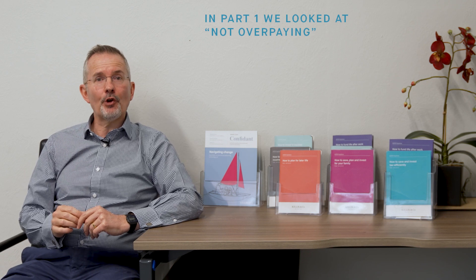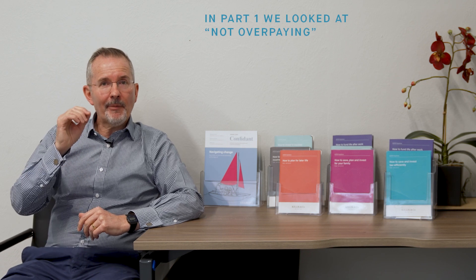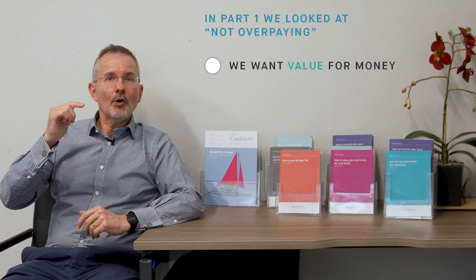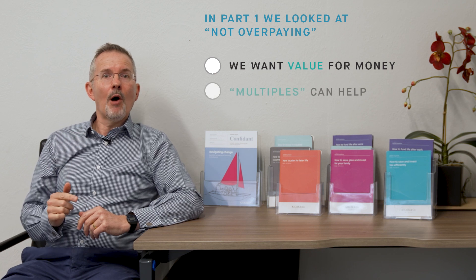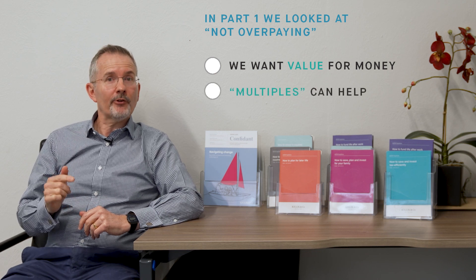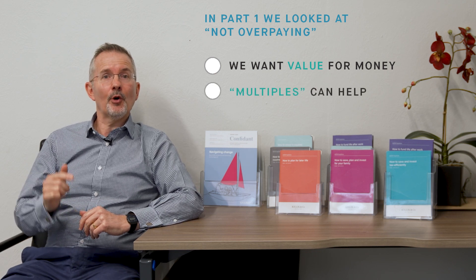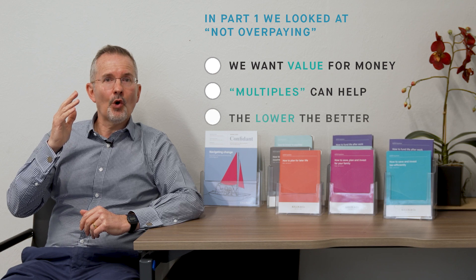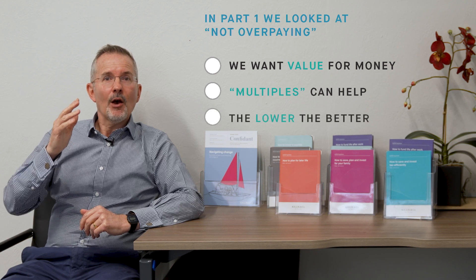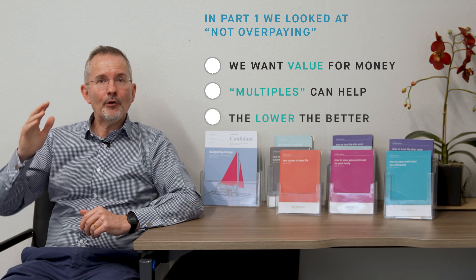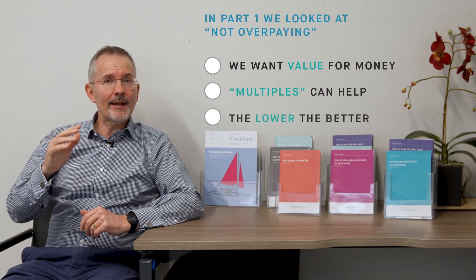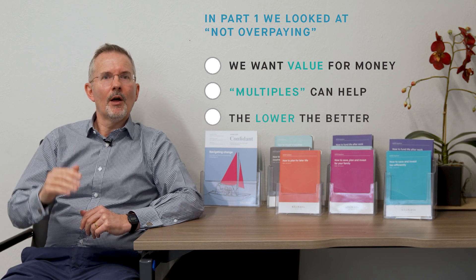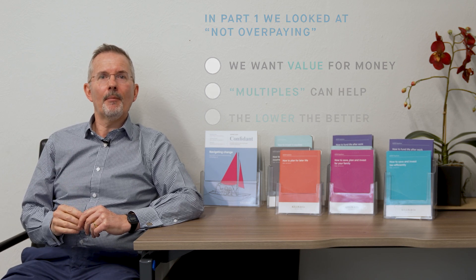Not overpaying is about finding value for money. It's about using multiples such as the price-to-book or the price-earnings ratio, making sure that we find companies where those multiples are relatively low if possible, and then holding them for the long term.